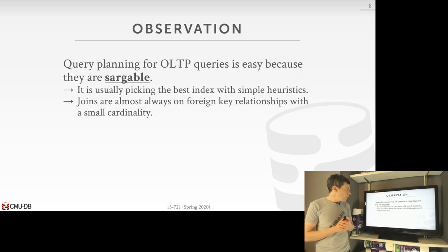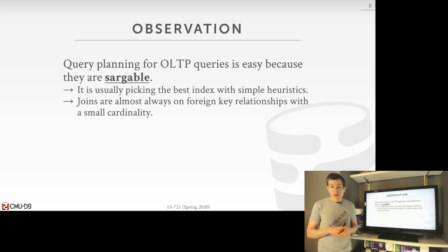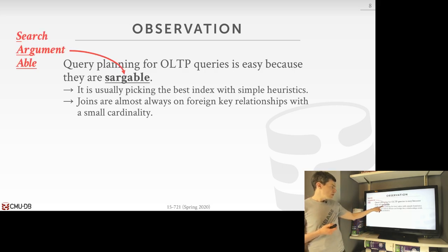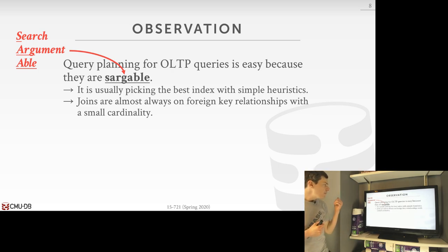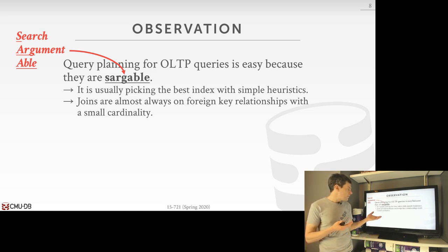These lectures are mostly focused on analytical queries, because in this world, the challenge of finding an optimal query plan is much greater than for OLTP or transaction processing workloads. Most of the time, queries in OLTP workloads are considered Sargeable — a term from the 1980s meaning 'search argument able.' For Sargeable queries, query planning is easy because OLTP workloads almost always do lookups on a small number of tables with indexes defined on the relevant attributes.